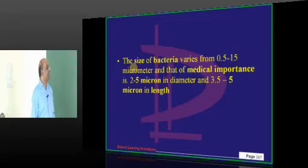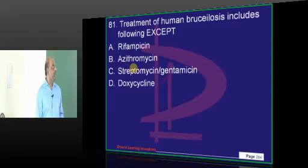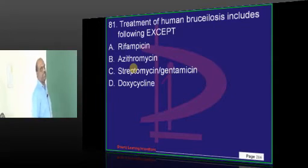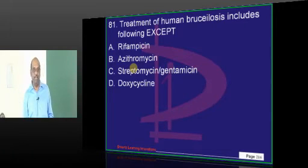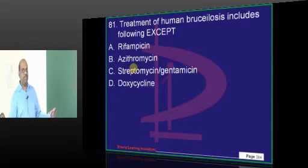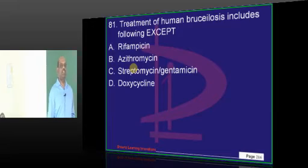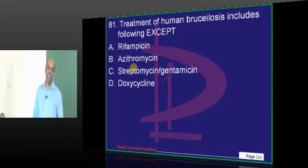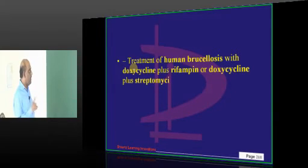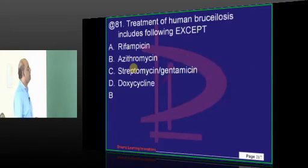Human brucellosis — what drug do you not use? We use doxycycline, we all know that. We are doubtful about rifampin, but we also use rifampin. Aminoglycosides are the sheet anchor therapy. We don't use macrolides like azithromycin. That is the reason the answer will be B. We use either doxycycline plus rifampin, or doxycycline plus streptomycin.